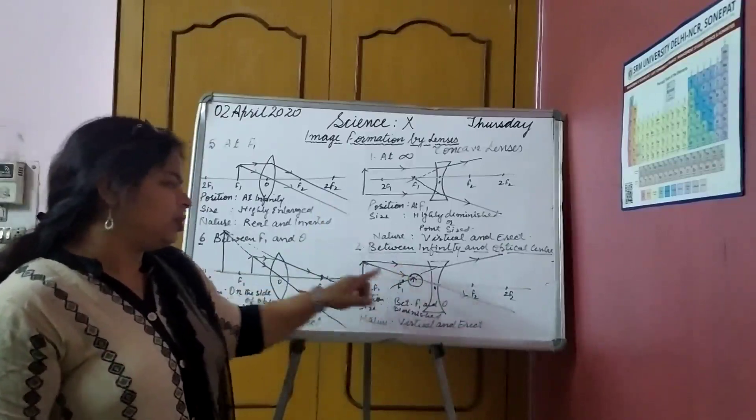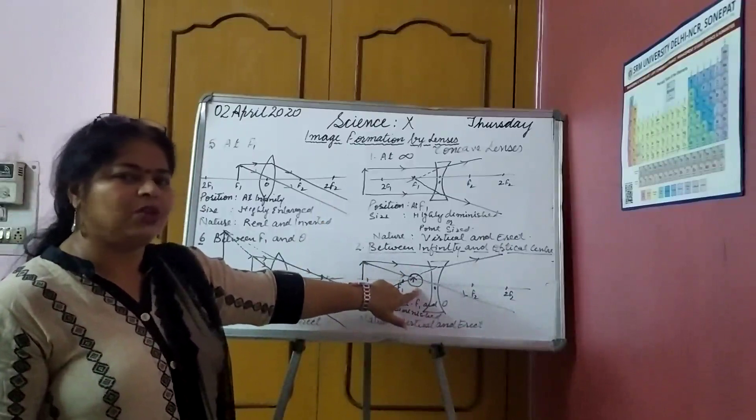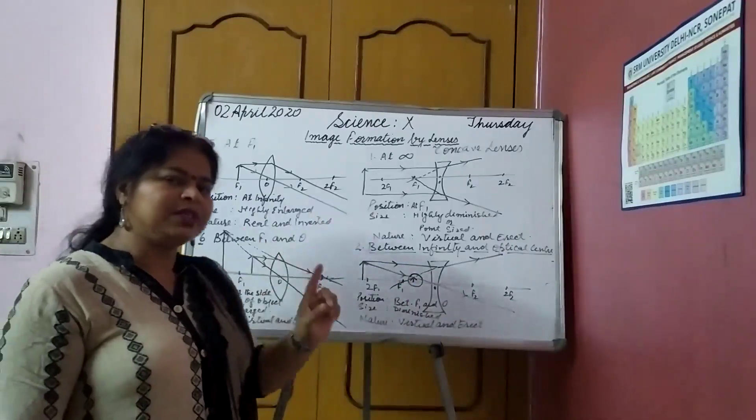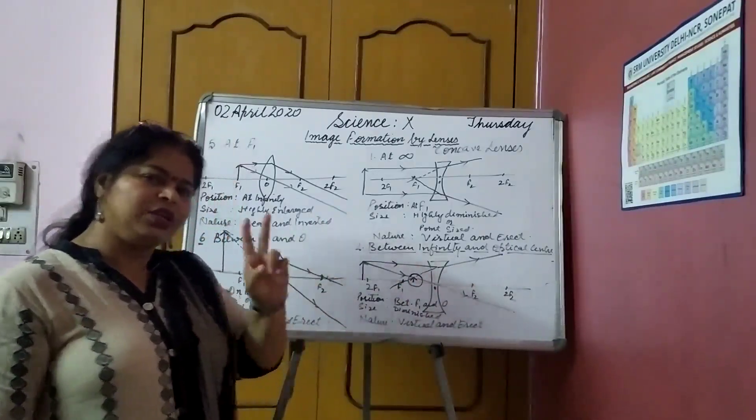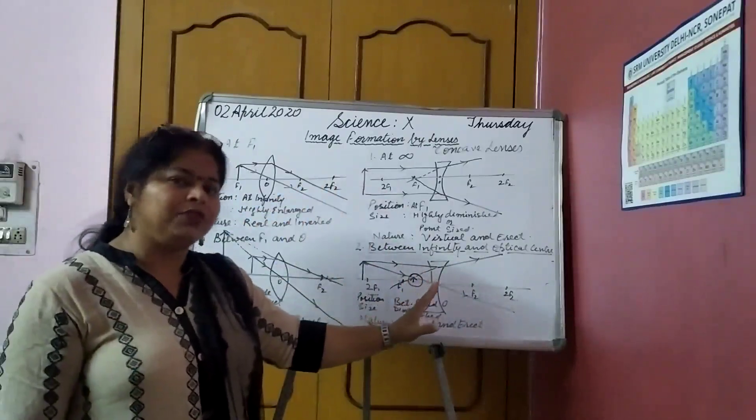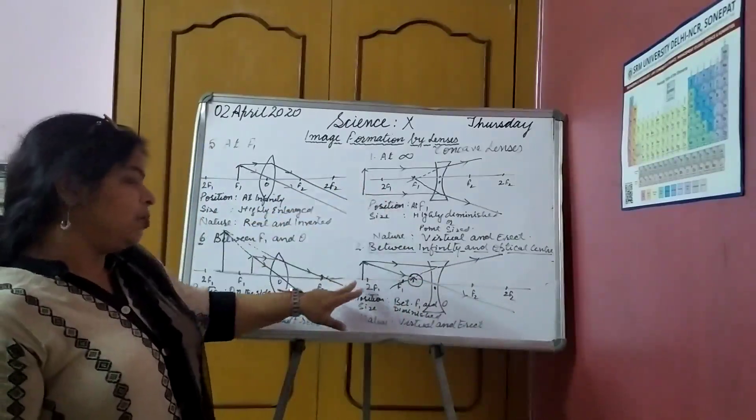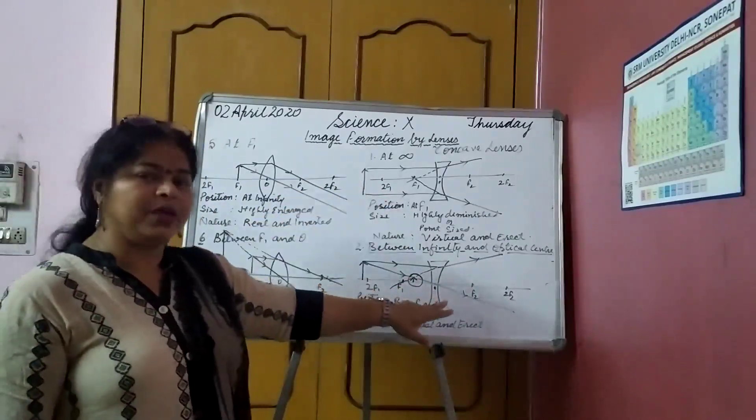Wherever you keep, the position of the image formed will be seen on here. Do you remember the convex mirror? In that also, we had only two cases. At infinity or between infinity and the pole of the mirror.